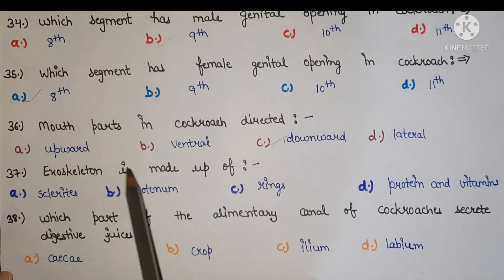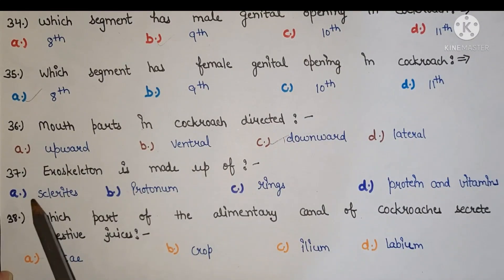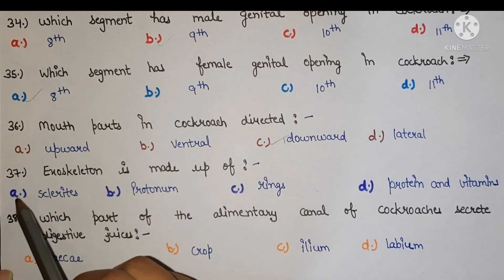Next, exoskeleton is made up of A skeleton, B chitin, C chitin, D protein and vitamins. Right answer is A chitin.